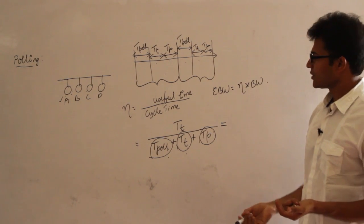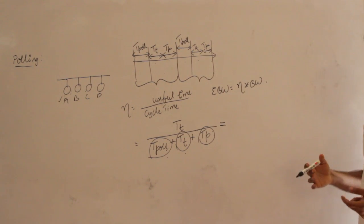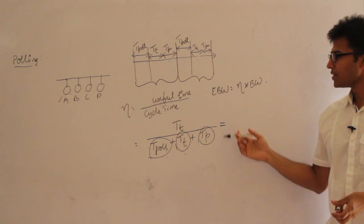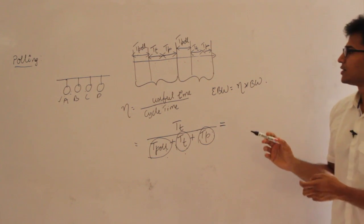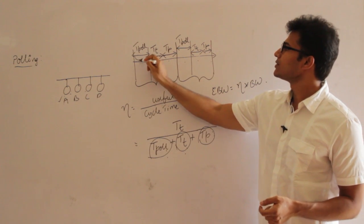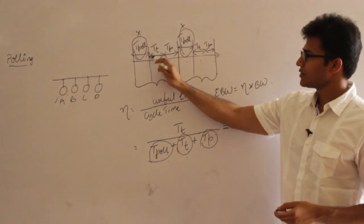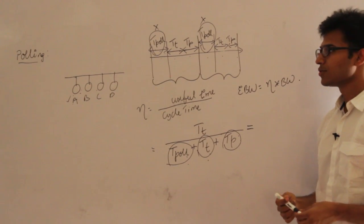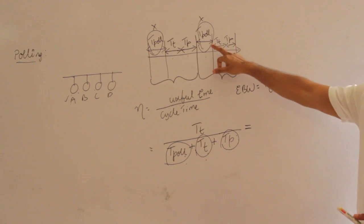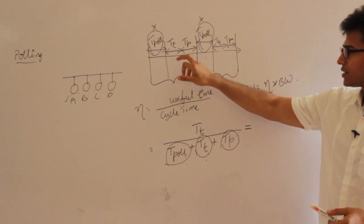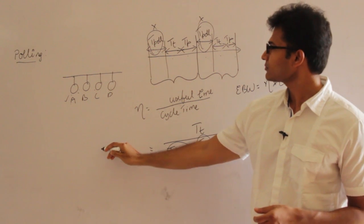The disadvantage of polling is the polling time itself — before transmitting, we waste time selecting a station. We introduced polling to fix TDM's reservation problem, but polling introduces its own overhead. So if we want to avoid both reservation and polling overhead, we should look at the next method, which gives stations the chance to transmit without either reservation or polling.